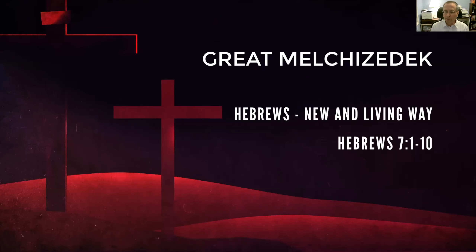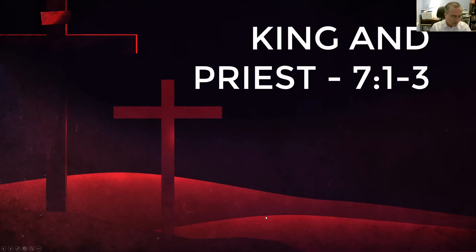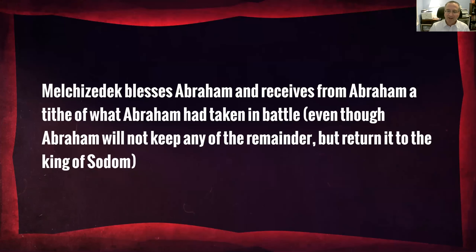The subject the author of Hebrews introduced back in chapter 2, verse 17 is that Jesus was to become our faithful high priest. The story starts in chapter 7, verse 1, describing how Melchizedek was a king of Salem and a priest of Most High God. Immediately we see a connection between both being a priest and also being a king — he's described as both the king and the priest of Most High God.